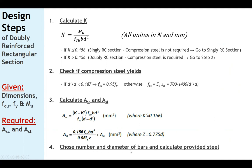Step 4: Choose the suitable diameter and number of bars and calculate the area of steel provided to complete the design of the section. These are the four clear design steps.